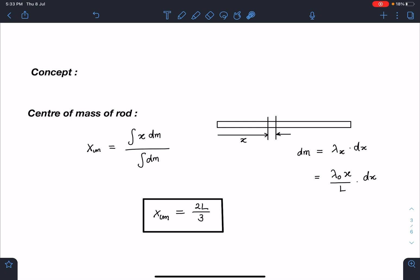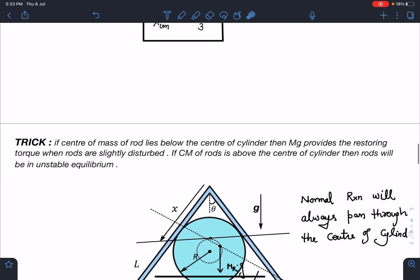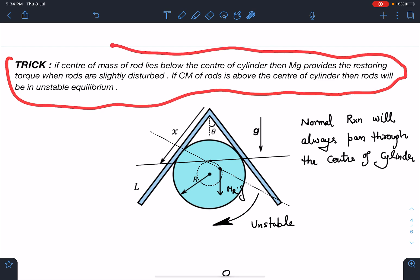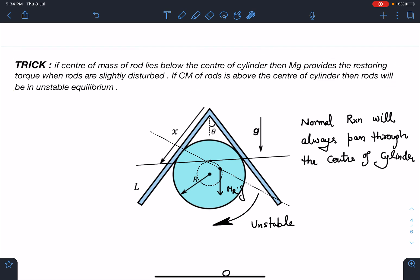Now the trick which we are going to use is: as long as there is some restoring force or restoring torque present in the system, we will say system will be in stable equilibrium. It will come back. So the trick here is going to be, as long as center of mass of this rod system is lying below the center of this cylinder, there will be torque due to mg will be restoring in nature and it will bring it back.